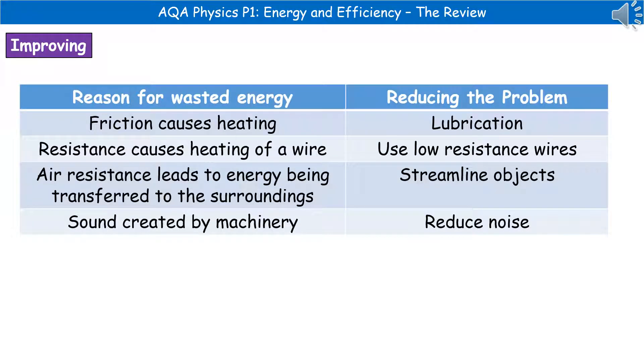The last thing you need to know is some of the reasons why energy is wasted, and what we can actually do to reduce that problem. So one of the major ones that we've got is friction, which causes heating. So one way we can reduce that problem, if we're looking at particularly things like motors and machinery, is we can lubricate it. Second one is that in any electrical devices using wires, then we have a certain amount of resistance within those wires, which leads to heating. So we can just use the lowest resistant wires possible.